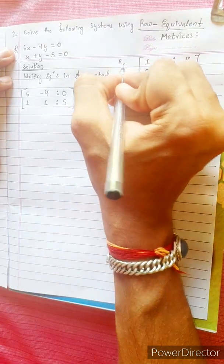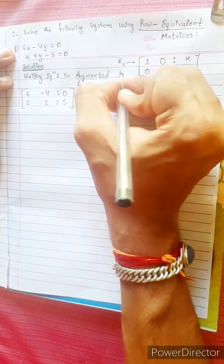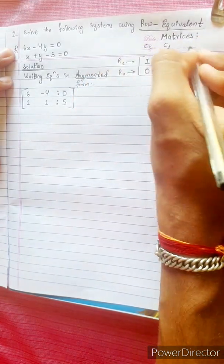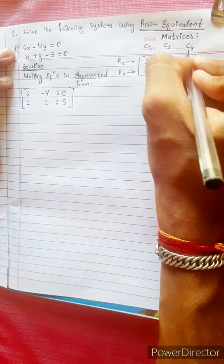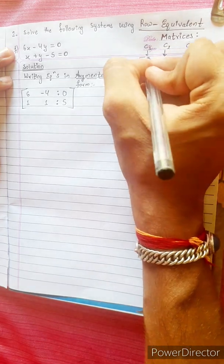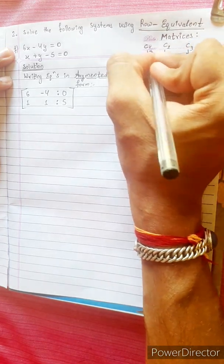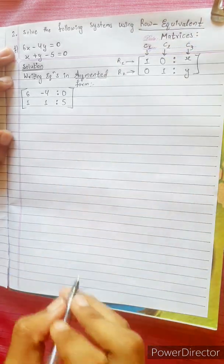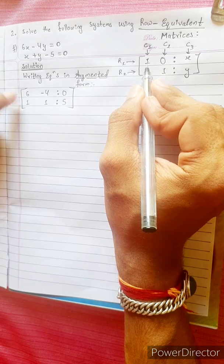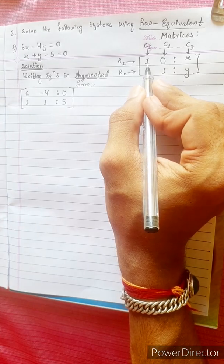Now let's look at Rho — Row, Column 1, Column 2, Column 3. We have 6; we have 1. We have 6 to make 1.